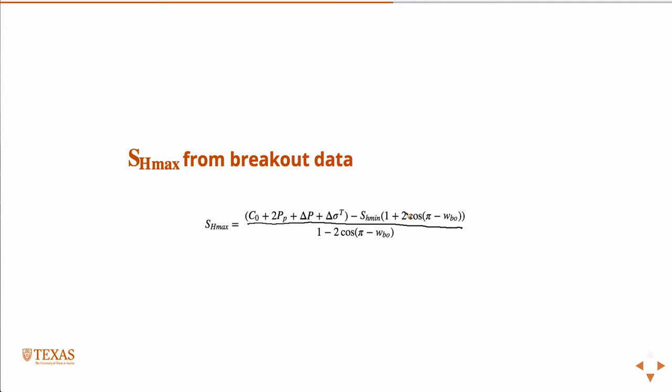So this is a breakout width. This equation is derived and presented in Zoback's book. Basically if you can, through televiewer caliper data in a wellbore, measure the width of the breakouts, you did a DFIT so you know SH-min, and you did some laboratory testing so that you know the unconfined compressive strength of the rock, then using this equation you can infer what SH-max is. So that's one way to do it when you can't measure it directly.